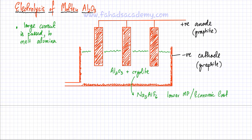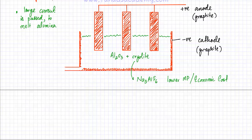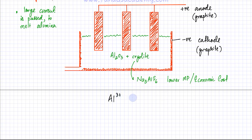Alumina is converted into molten form by passing a very large current of around 6–7 kiloamperes, which produces enough heat to melt the alumina. Once molten, the aluminium ions are free to move around and electrolysis becomes possible. Molten alumina contains two main ions: Al3+ and O2−.